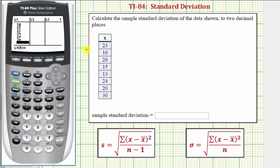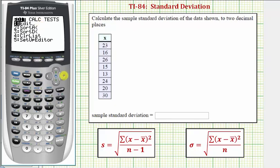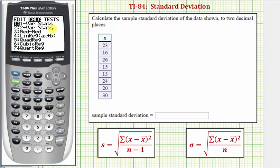Now we want to use the one-var stat tool. So we press STAT, right arrow to CALC. And one-var stat is the first option. So we can press one or ENTER because one is already highlighted.